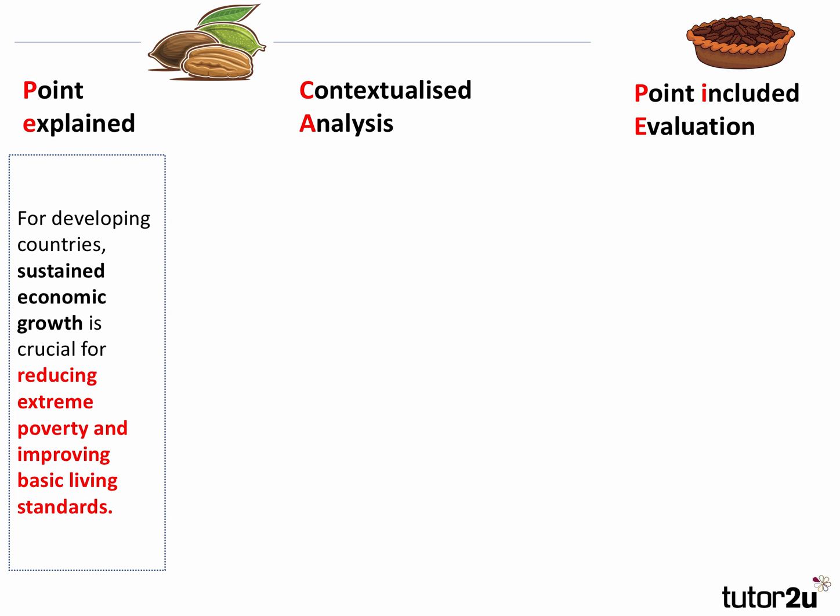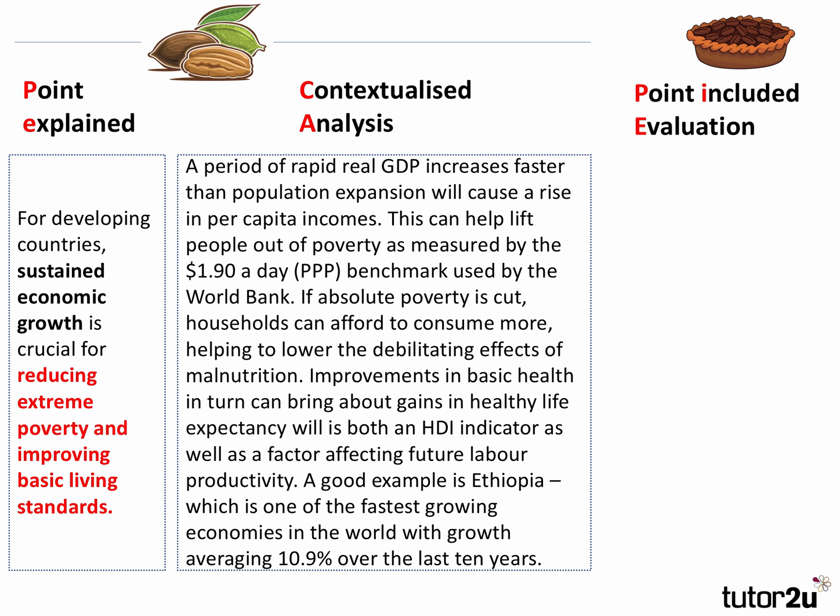My first point: for developing countries, sustained growth is crucial for reducing extreme poverty and improving basic living standards. A period of rapid real GDP growth that increases faster than population growth will cause a rise in per capita incomes. This could help lift people out of poverty as measured by the $1.90 a day PPP benchmark. As absolute poverty is cut, households can afford to consume more, helping to lower the debilitating effects of malnutrition.